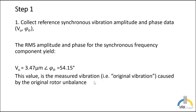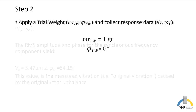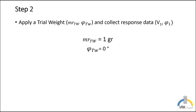The RMS amplitude is 3.47 microns and the phase angle is 54.15 degrees. This value is measured the vibration in its original condition. Now we will go to step two, which is applying a trail weight and collect the response. For this example, we will put one gram at zero degrees. So let's go back to the software.